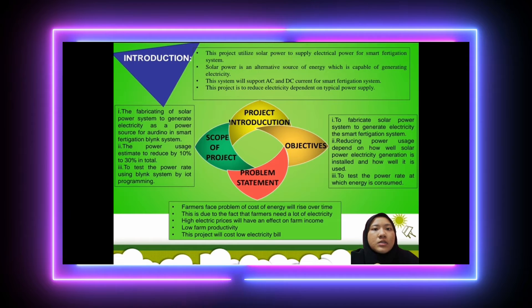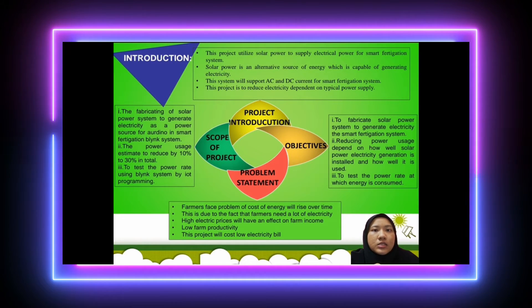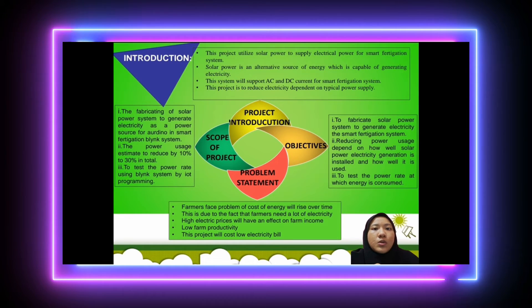The problem statement: first, farmers face the problem of rising energy costs over time. Two, this is because farmers need a lot of electricity. Three, high electricity prices negatively affect farm income and result in low farm productivity. This project aims to cause a lower electricity bill.